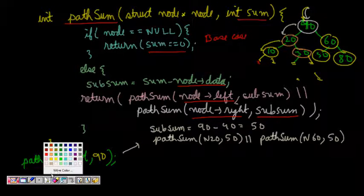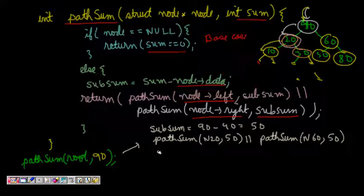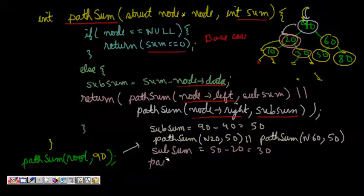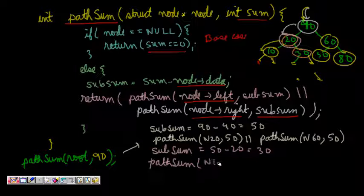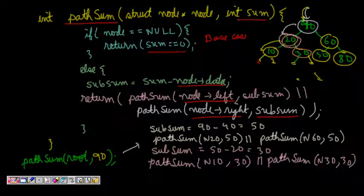Let's concentrate on the left path first. Now we are at node 20 with subsum 50. The new subsum becomes 50 minus 20 which is 30. It then calls pathSum(node=10, 30) and pathSum(node=30, 30).